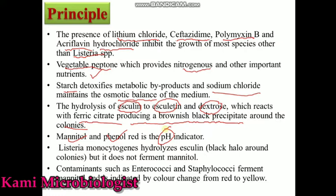Listeria monocytogenes mostly do not ferment dextrose or lactose. That's why the colonies show a brownish appearance. Listeria monocytogenes mostly hydrolyze esculine, which means they form black hollow round colonies, but they do not ferment mannitol, so the pH indicator will not drop. However, other bacteria like Enterococcus and Streptococcus can ferment mannitol, causing the media color to change from red to yellow due to mannitol utilization.